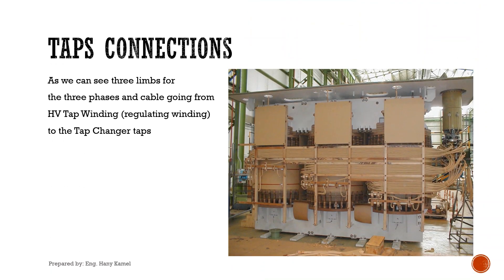Taps connections. As we can see in the picture, three limbs for the three phases, and cable going from HV tap winding to the tap changer taps.